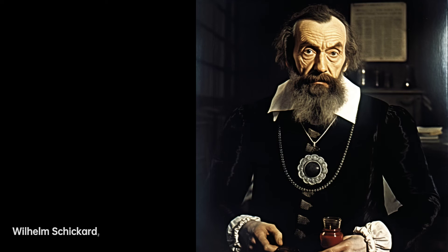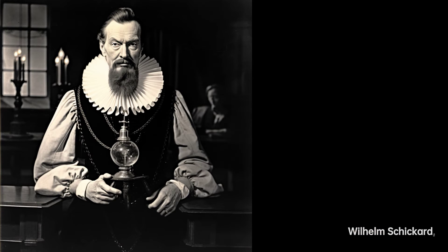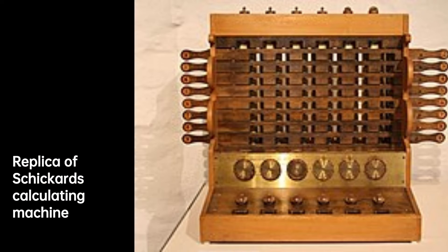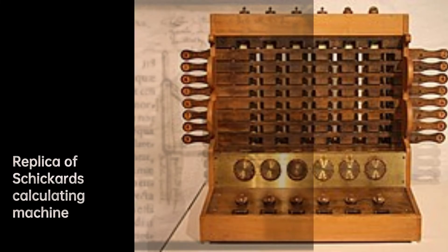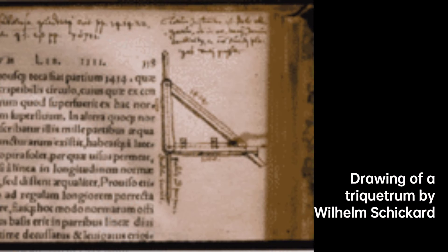In the early 17th century, Wilhelm Schickert, a German mathematician and astronomer, made a groundbreaking invention that would revolutionize the world of calculations. In his letters to Kepler in 1623 and 1624, Schickert revealed his creation, which he called an Arithmetica Morganum, later known as a Rechener or Calculating Clock. Schickert's invention aimed to assist in the four basic arithmetic functions and simplify the laborious task of calculating astronomical tables.